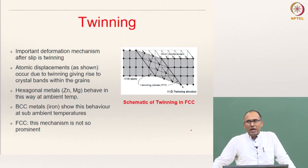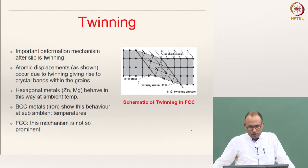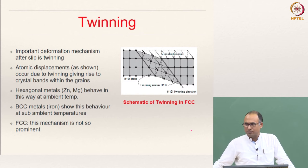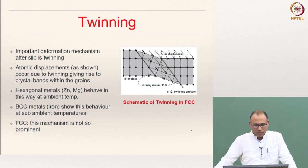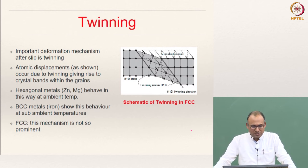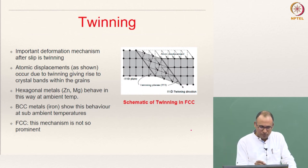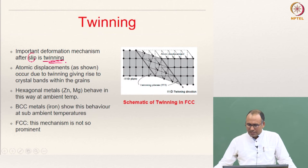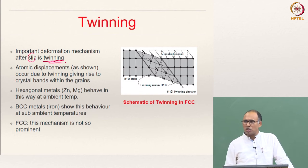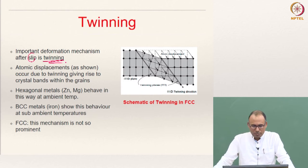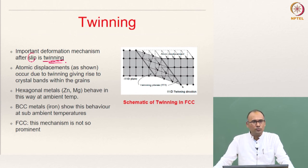So far we have discussed the onset of plastic deformation through slip and dislocation motion. There is also another important deformation mechanism called twinning. Twinning is a special kind of deformation mechanism wherein the atoms must move in a coordinated fashion.